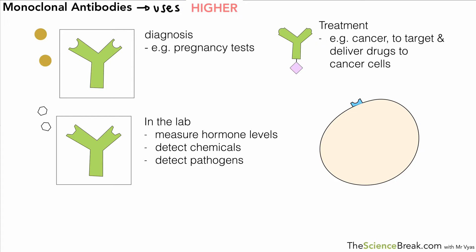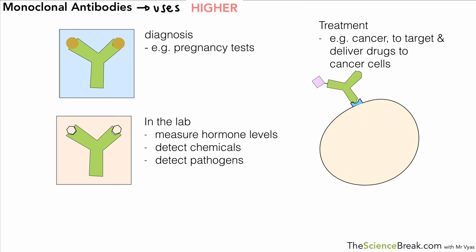There are several uses for monoclonal antibodies. First, diagnosis: one example is pregnancy tests. A woman who becomes pregnant will produce a particular hormone in the very early stages, and antibodies can identify that hormone — they can even be combined with chemicals to change color when they attach to it. A second use is in the lab, such as testing blood to measure hormone levels, detect specific chemicals, or detect a particular pathogen. The chemical or hormone attaches to the monoclonal antibody and a color change signals its presence.